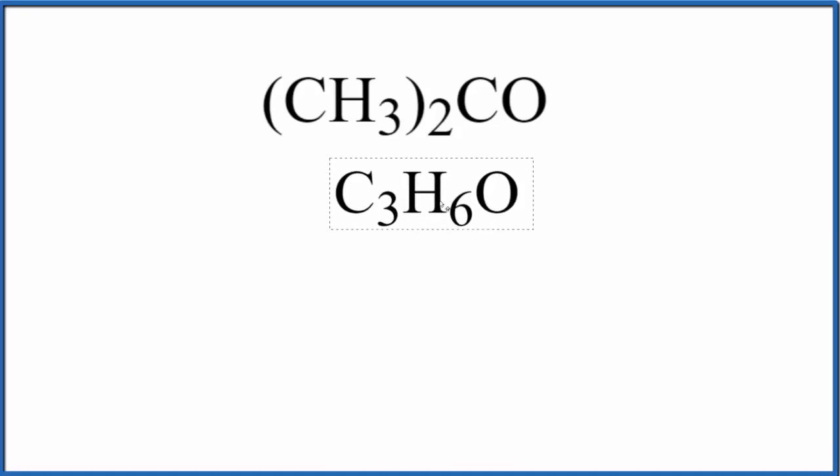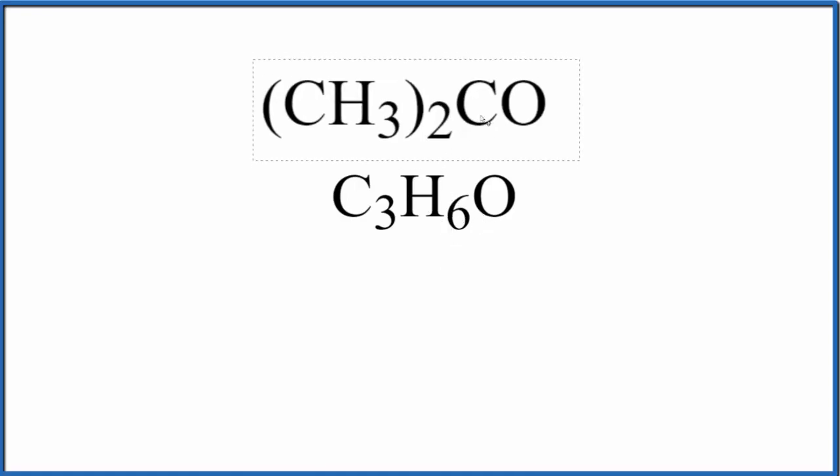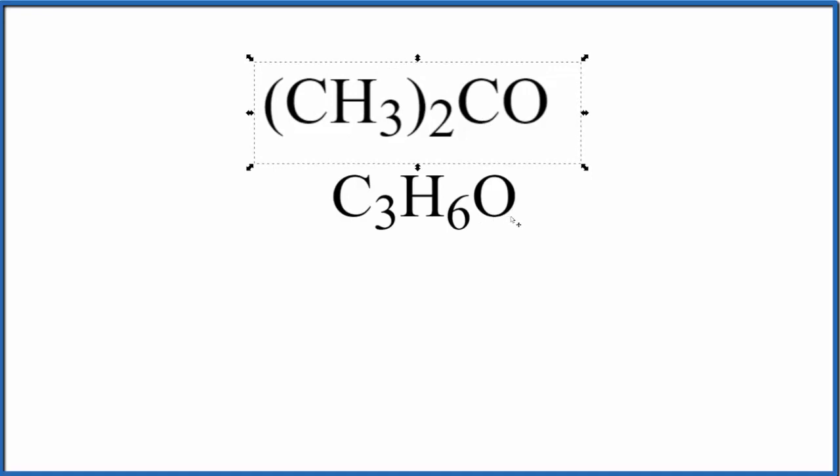The problem with this formula here, if you try to draw the Lewis structure, we have isomers. You could arrange these atoms a number of different ways that would still be valid. So let's go with this one up here to draw the Lewis structure of acetone.